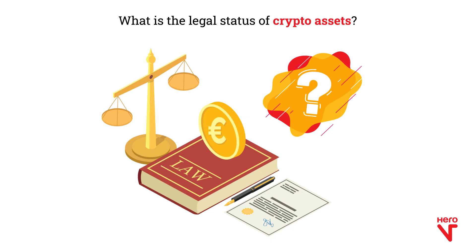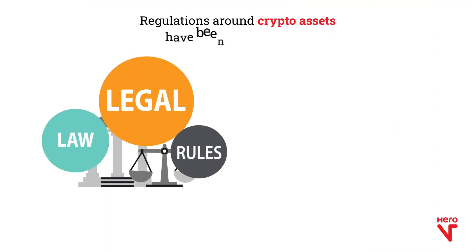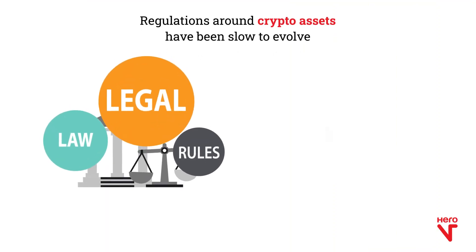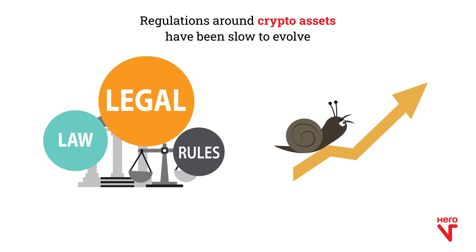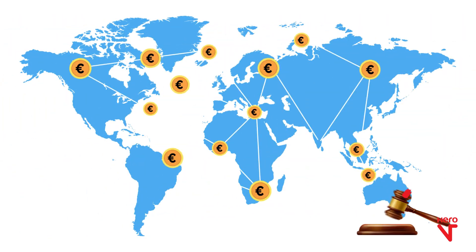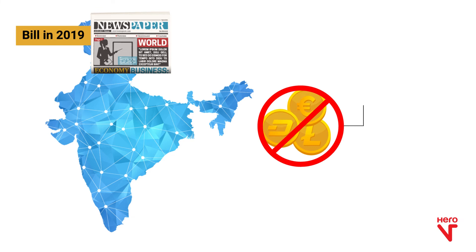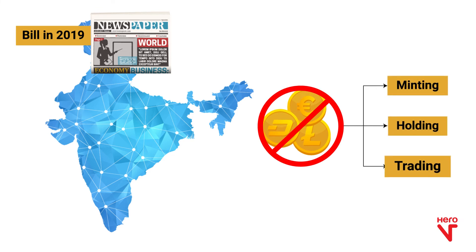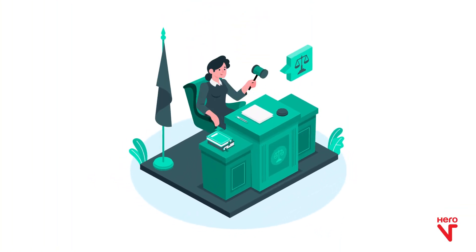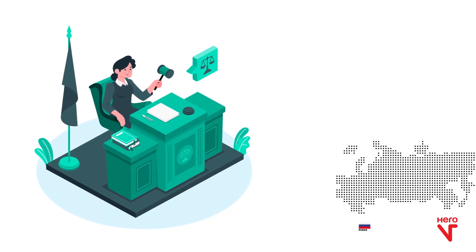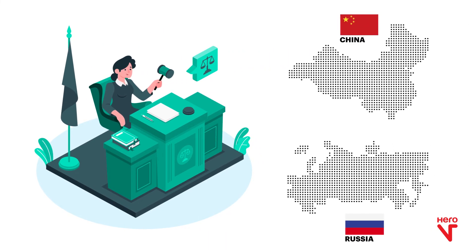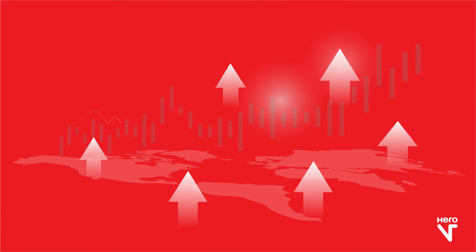But what is the legal status of crypto assets? The evolution of regulatory regimes in response to the growth in crypto asset markets has been slow — it remains mostly unregulated across the world, including India, which introduced a bill in 2019 to essentially ban their minting, holding, and trading, though the underlying technology is encouraged to be applied across uses. The most recent cases of jurisdictions proposing bans or banning cryptos have been Russia and China.